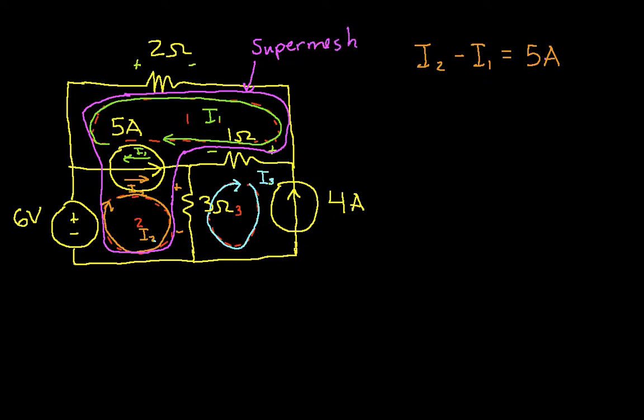And you'll notice that what I've done is applied KVL to the two meshes that are involved in the current source. Another way of thinking about it is I've gone around the current source. I've basically created a mesh that goes around the current source. So with the super mesh in place, I can now go ahead and apply KVL around the super mesh and get an equation that will relate I1, I2, and I3.